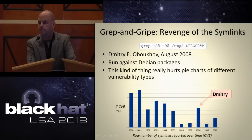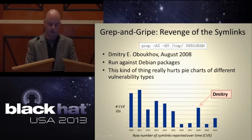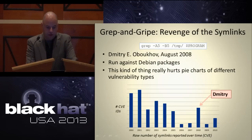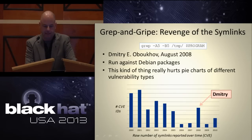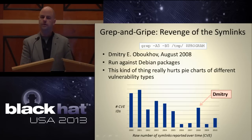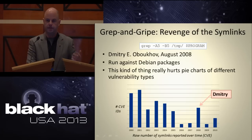One technique is 'grep and gripe' — you use grep against some source code, you see signs that there may be a problem, and you gripe about it by posting to full disclosure or BugTraq. It's a very effective method but has a lot of false positives. Dimitri in August 2008 — a single month — said he was going to look for symlink vulnerabilities. Look at the influence that one person had against all other symlinks reported over time. One researcher has the power to influence not only vulnerability stats worldwide but also our work cycles and budgets.